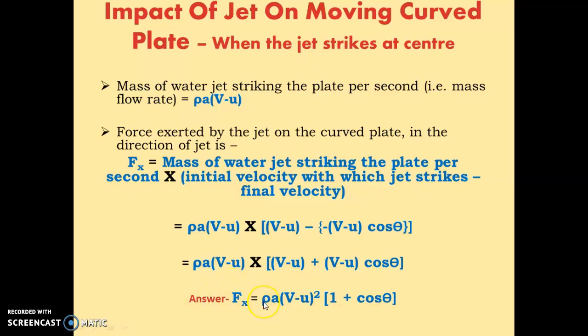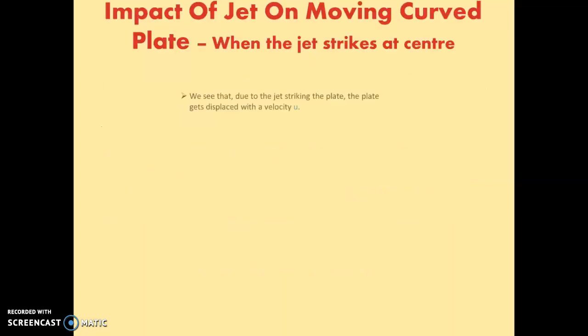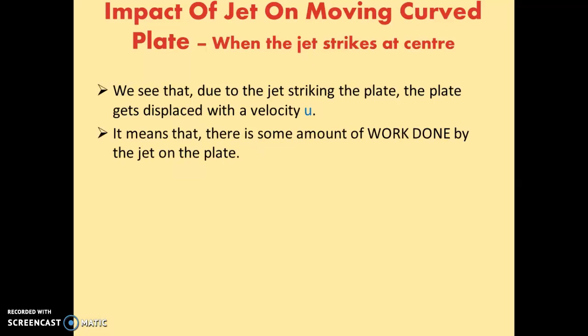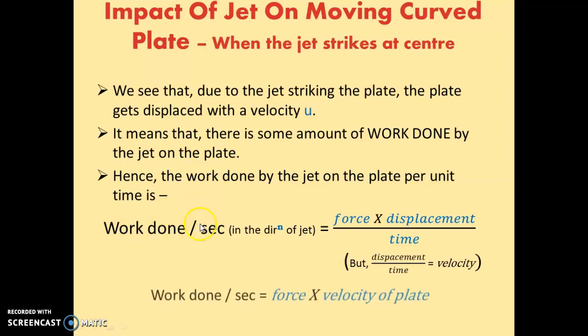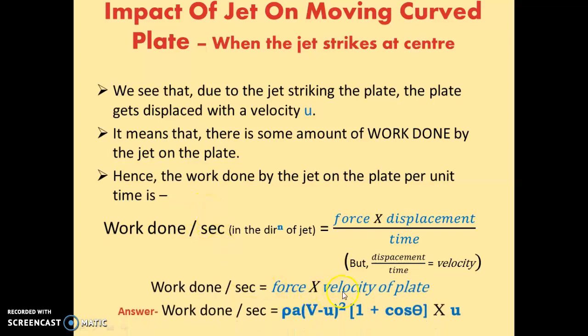This is the force exerted by the jet on the curved plate. Now we will see the work done by the jet on the plate. Work done per second equals force multiplied by the velocity of the plate. The force is rho a (v minus u)² (1 + cos theta) and the velocity of the plate is u. So we have seen both the force and the work done per second for the impact of a jet on a moving curved plate when the jet strikes at the center.